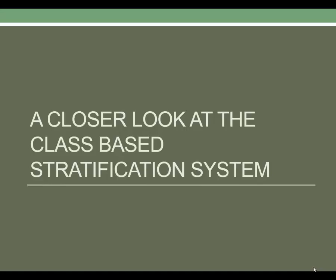This is part two of the required reading from chapter seven on social stratification. In part one we introduced the concept of social stratification and discussed three of the four primary systems: slavery, caste, and estate. In this part we will discuss the class system, what makes it unique, why social stratification is a common characteristic of all known societies, and how elites maintain social stratification.